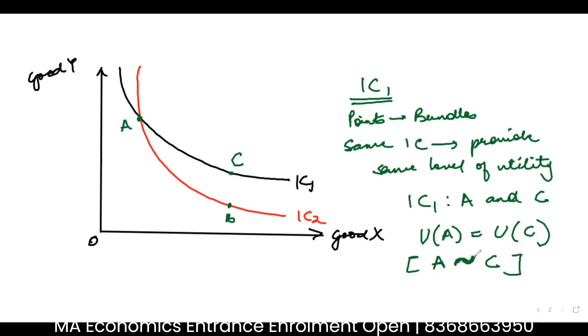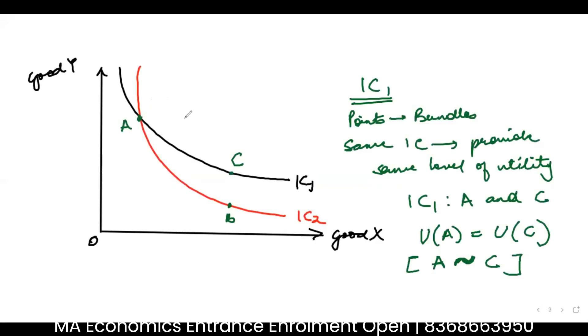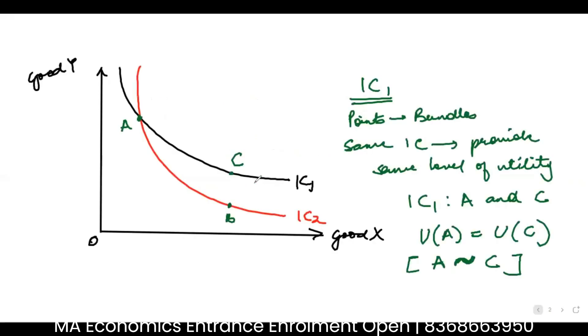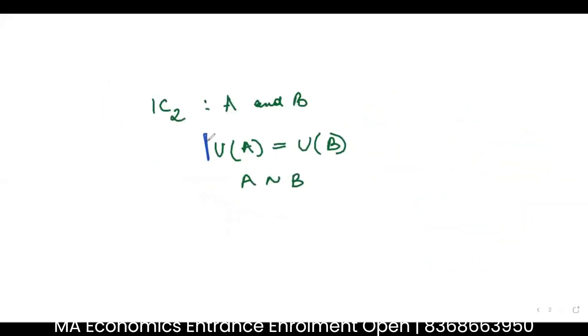Now considering indifference curve 2: A and B lie on IC2, and since A and B lie on the same indifference curve, the utility from A should equal the utility from B. You should be indifferent between A and B because they lie on the same indifference curve IC2. This is equation 2.